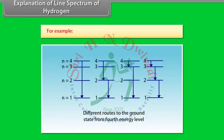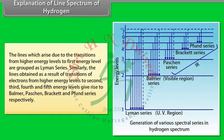For example, consider the electron in the fourth energy level (n = 4) of different hydrogen atoms. In some atoms it may come to ground state (n = 1) by direct jump, while in others it may first jump to the second energy level (n = 2). The lines arising due to transitions from high energy levels to the first energy level are grouped as the Lyman series. Similarly, transitions to the second, third, fourth, and fifth energy levels give rise to the Balmer, Paschen, Brackett, and Pfund series respectively.